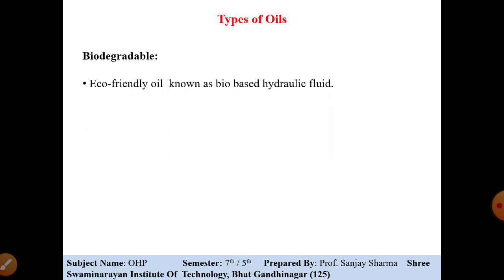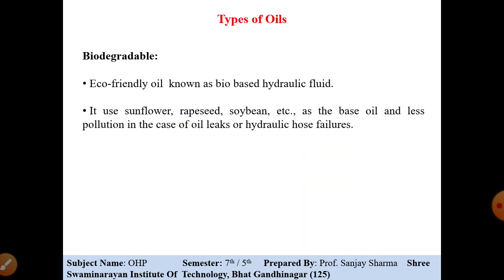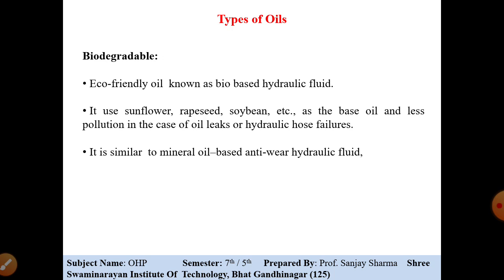Biodegradable oil is an eco-friendly oil known as bio-based hydraulic fluid. It uses sunflower, rape seeds, soybean, etc. as a base oil. There is less pollution in case of oil leakages and hydraulic hose failures. By adding additives, we can make it usable for the hydraulic system or any other application. It is similar to mineral oil-based anti-wear hydraulic fluid in its anti-wear properties.